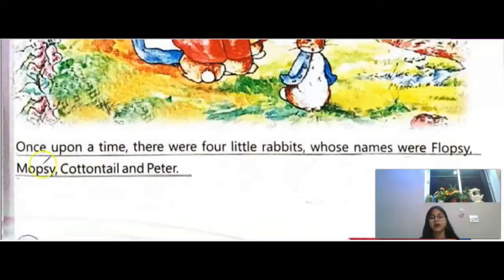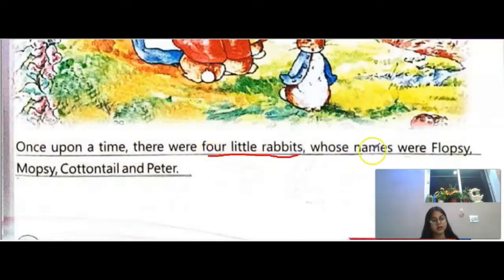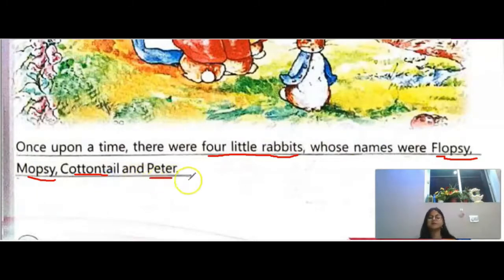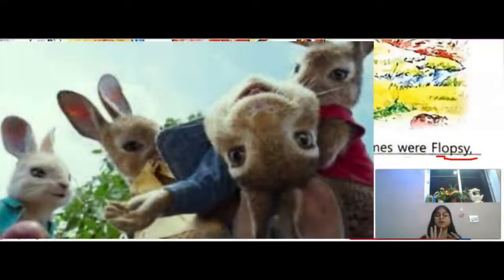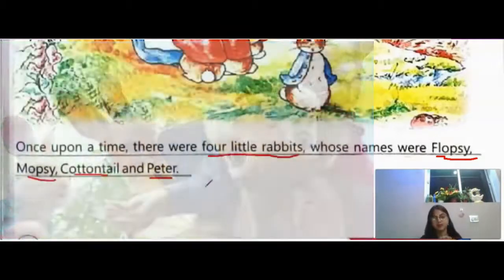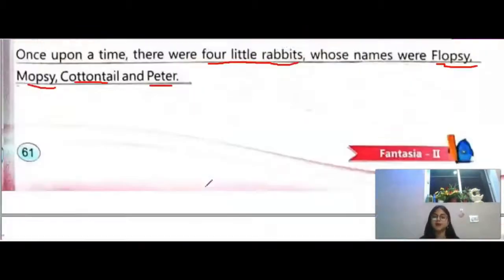I hope you all are having pencils in your hands, so you will keep on underlining. Once upon a time, there were four little rabbits whose names were Flopsy, Mopsy, Cottontail, and Peter. So we have four little rabbits in this story.